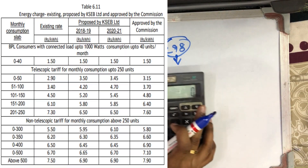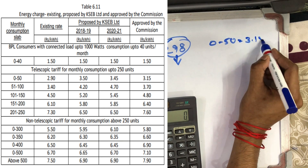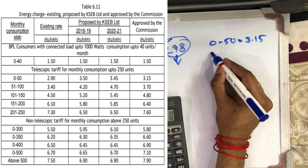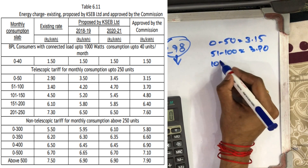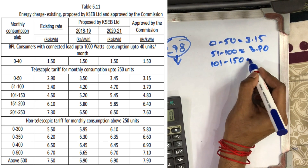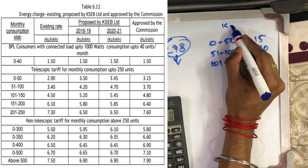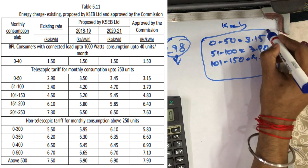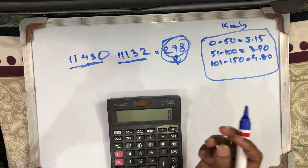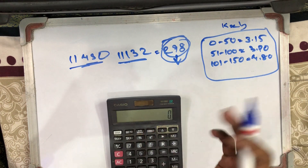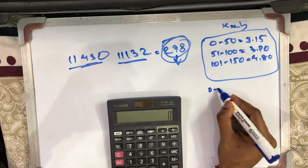We already have a slab of KSV: 0 to 50, 51 to 100, and so on. This is per month — 1 month. If we have a consumption of KSV and divide it per month, we will double. So if we have a slab of KSV, we will have to make a slab. That means 2 to 100 units, 3 to 15.